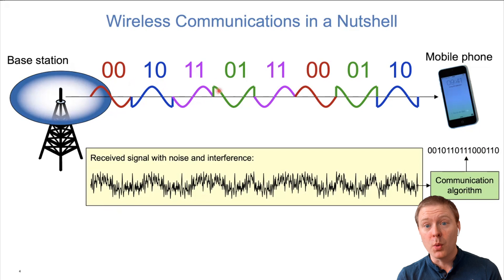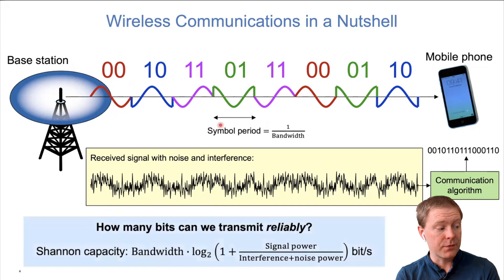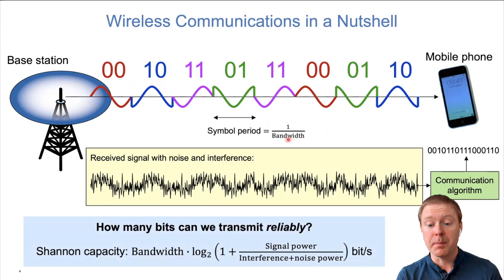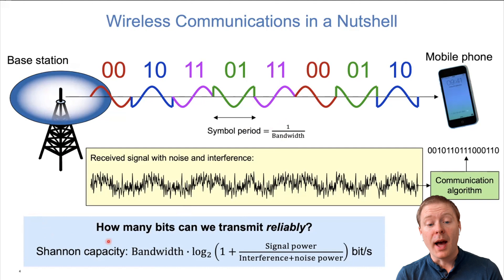If we have more symbol options it will be harder to tell them apart when noise is added. Each symbol has a particular time length that comes from the sampling theorem, which tells us you can transmit the same number of complex-valued samples per second as you have bandwidth. Therefore the period of one transmission is one divided by the bandwidth.